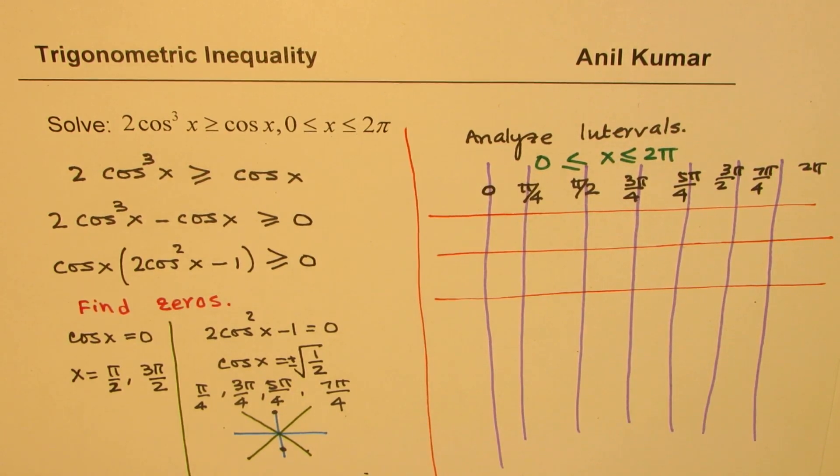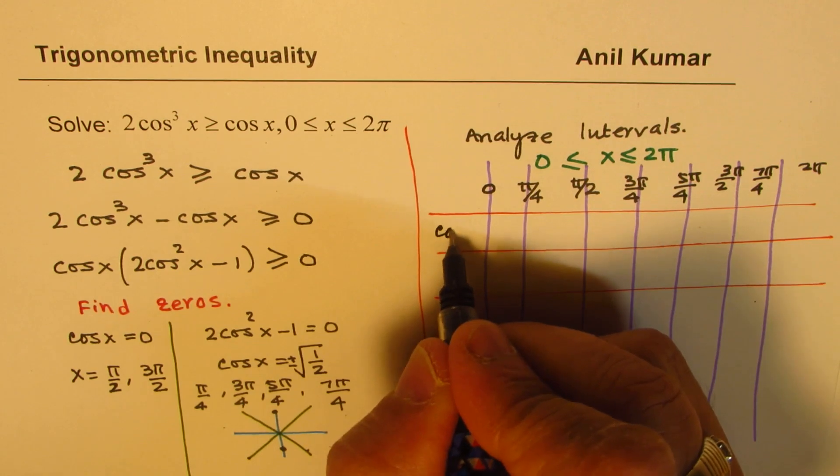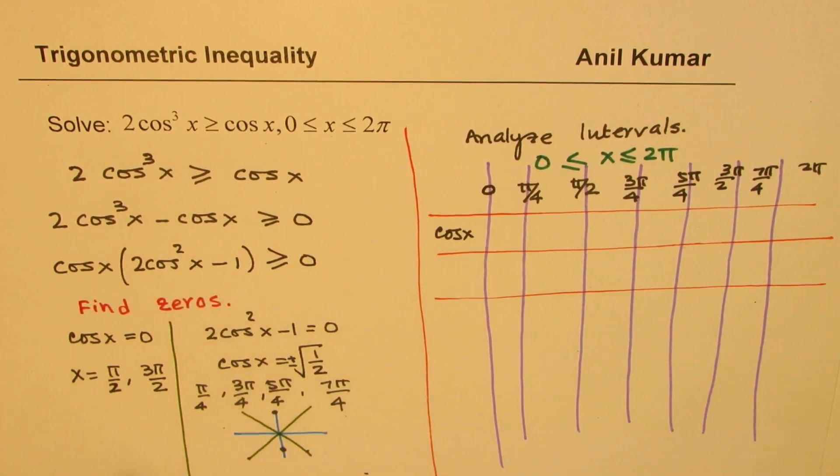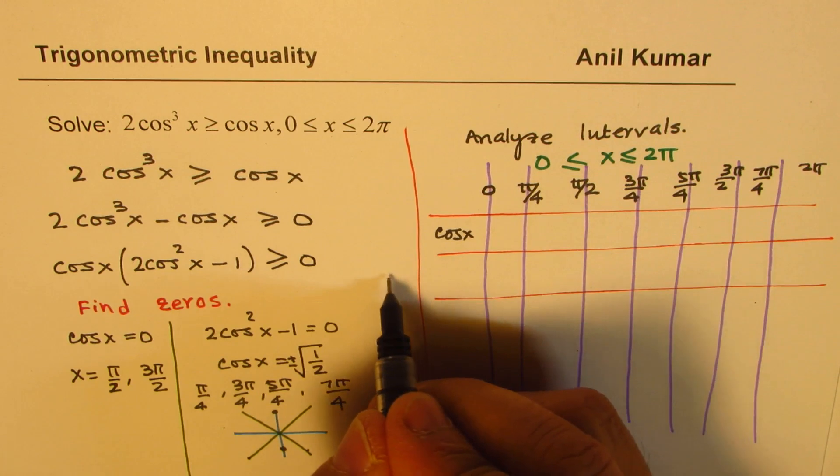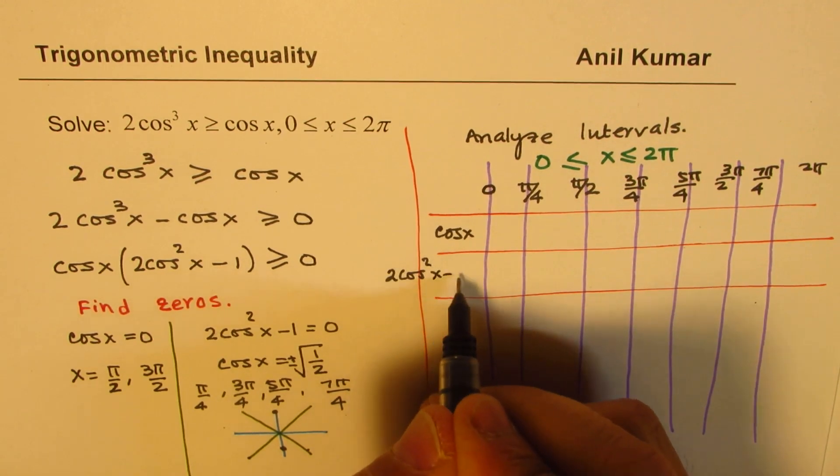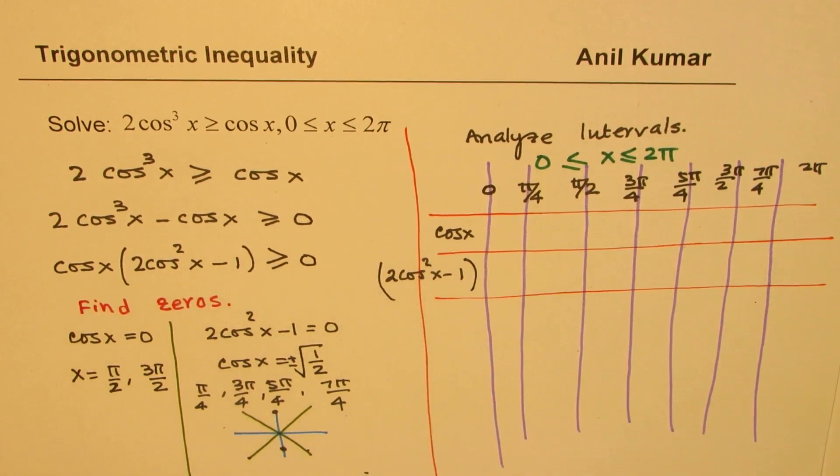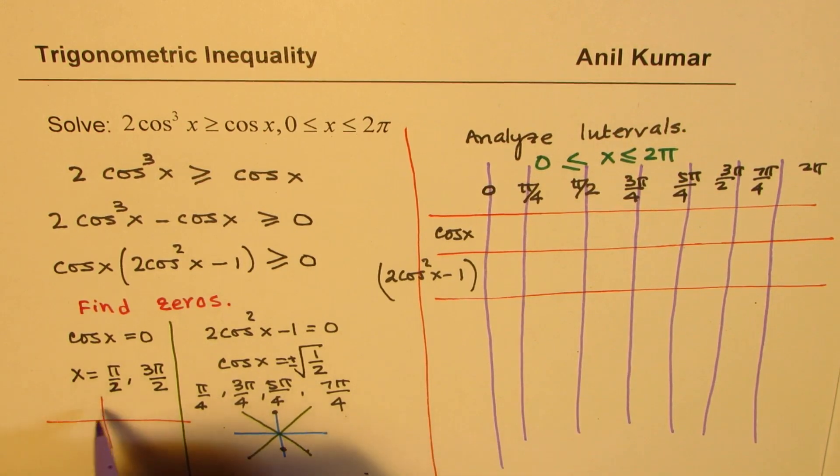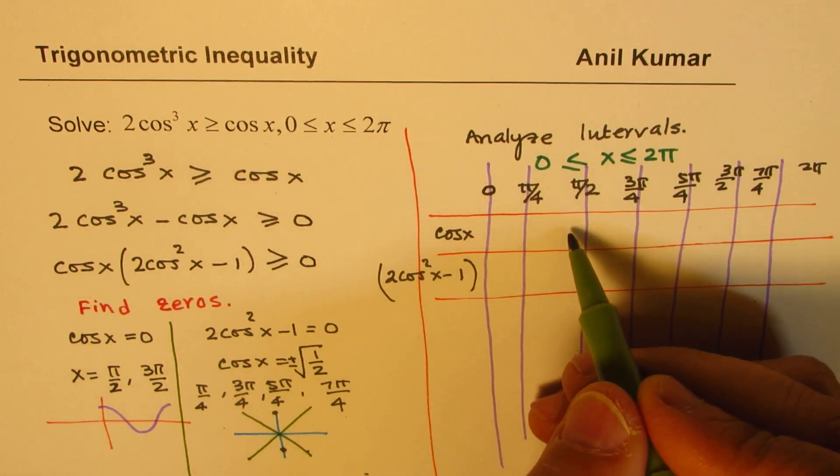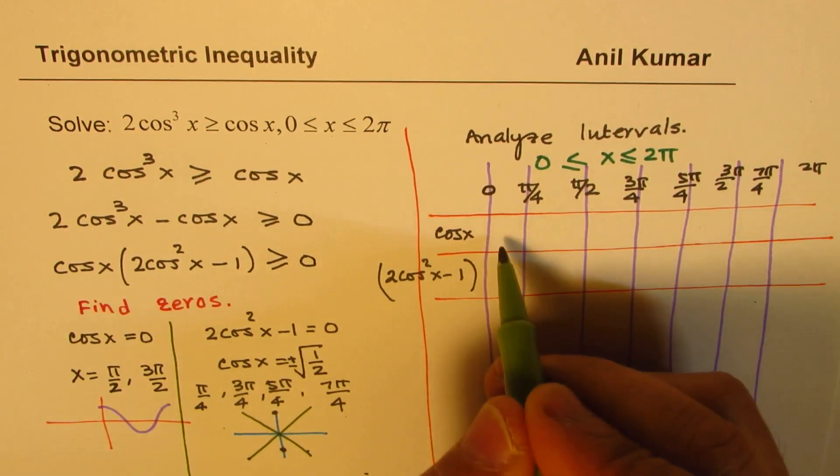So the factors are cos x and the other factor is 2cos²x - 1. Now let's try to see for cos x, when is it positive? So cos x is like this. For cos x, it is positive from, we know, at π/2 it is becoming 0, so it is positive before that.